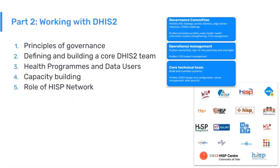Part Two is Working with DHIS2, and here we'll be talking primarily about people. People are really at the heart of DHIS2 — it's not just about software, it's about the people who set up, use, and maintain that software. We'll talk about principles of governance and introduce our three-part governance model, including a governance committee, operational management, and a core technical team. We'll then talk about how to define and build that core DHIS2 team, explore health programs and the data users in those programs, discuss capacity building for the core technical team, health programs, and other users, and talk about the role of the HISP network in supporting DHIS2 implementation and capacity building.